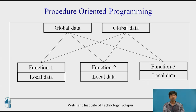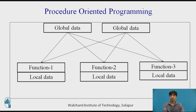There are two global data items; function one, function two, and function three each have their own local data. Function one, two, and three access the first global data, while function one and two also access the second global data. The figure shows the relationship of data and functions in a procedure-oriented program.